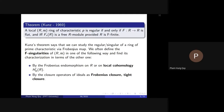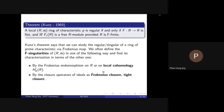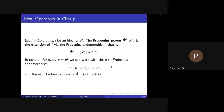We can define the F-singularity of a ring in one of two ways. The first way: we can use the Frobenius endomorphism or the Frobenius action on local cohomology to define the singularity of the ring. The second way: we can use the closure operator on ideals to define F-singularity, using the Frobenius closure of an ideal. Now, the Frobenius power of I, denoted I^{[p]}, is the extension of the ideal I under the Frobenius endomorphism — that is, I^{[p]} is the ideal generated by a^p for all a in I.